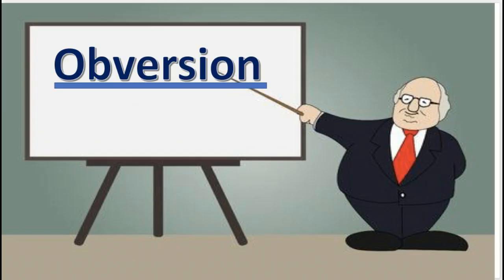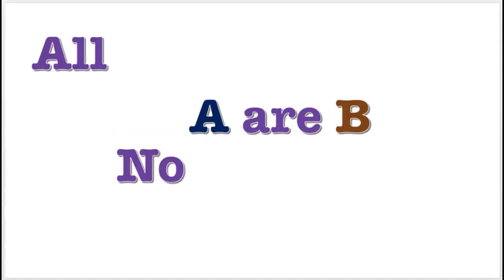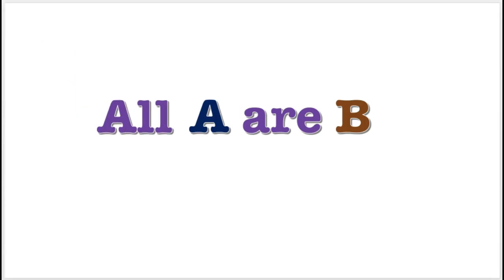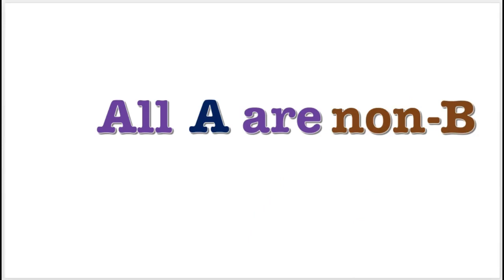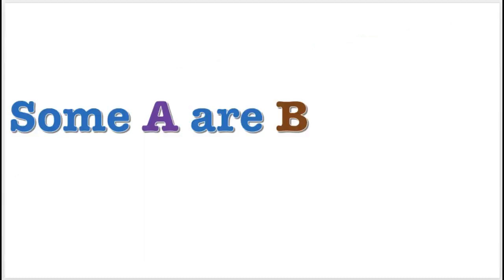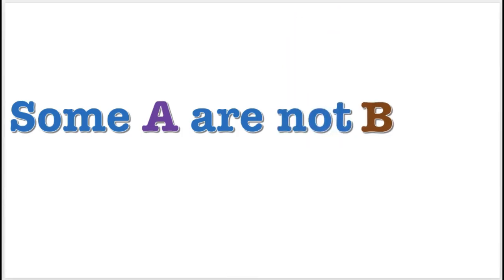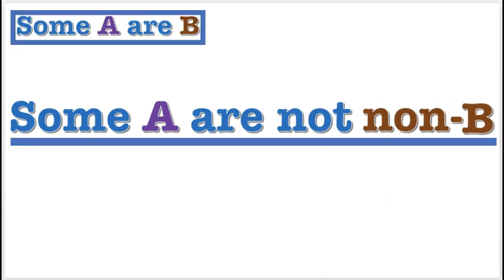Let's perform obversion on some categorical propositions. Here's an E-proposition. First, we change the quality. Then, we change the predicate. Now you see the obverse. Here is another example. For this I-proposition, we first change the quality. Then, we complement the predicate. Now you see the obverse.